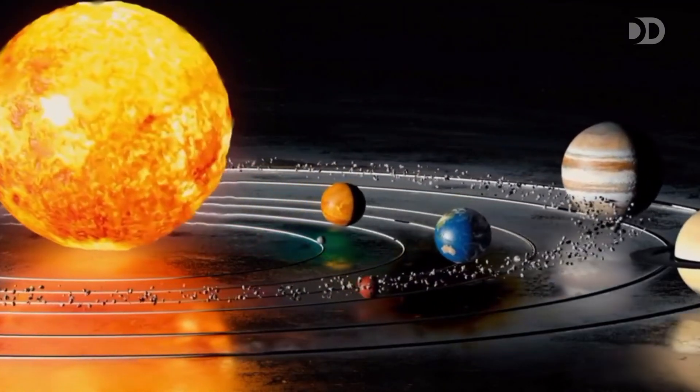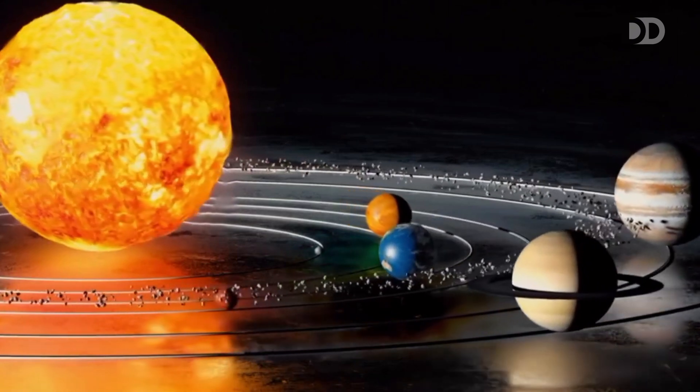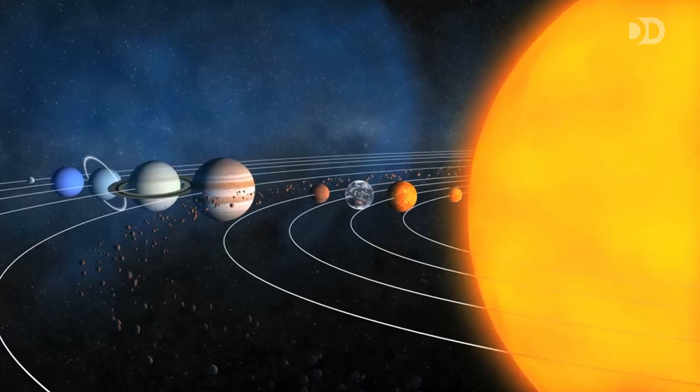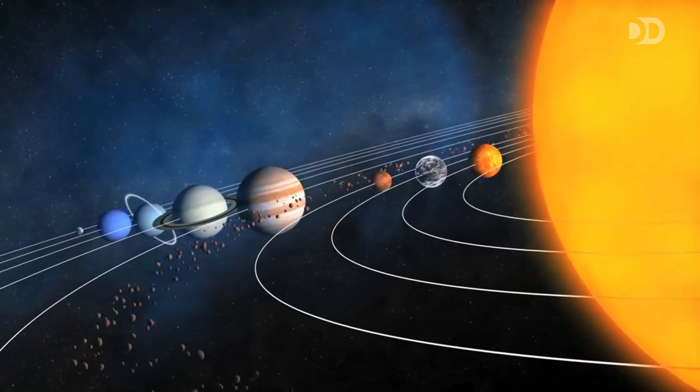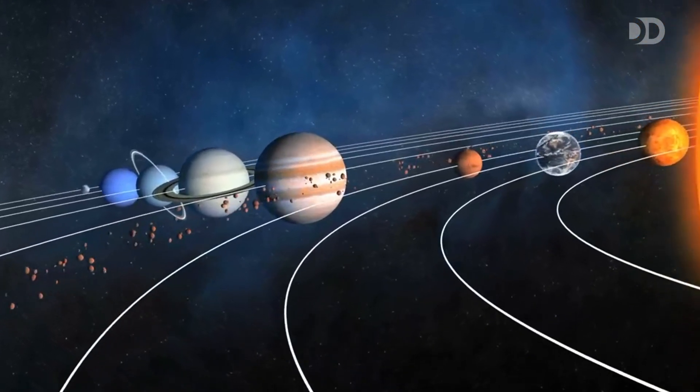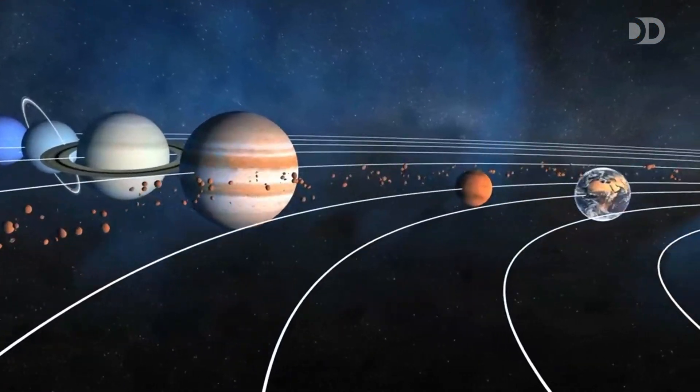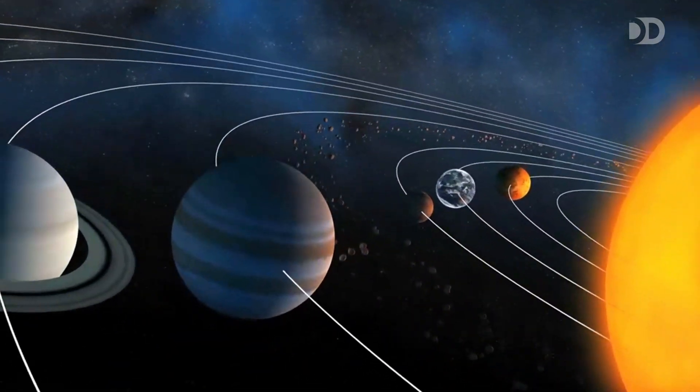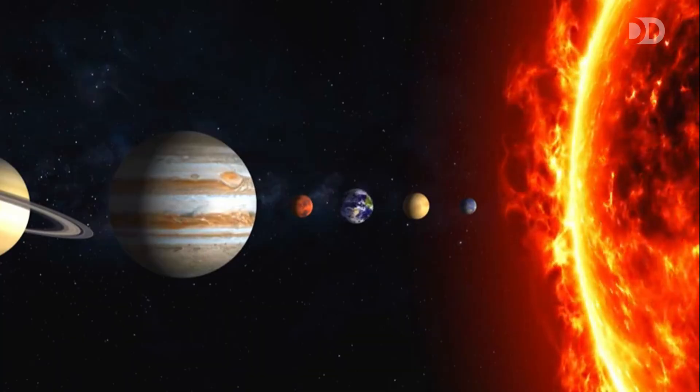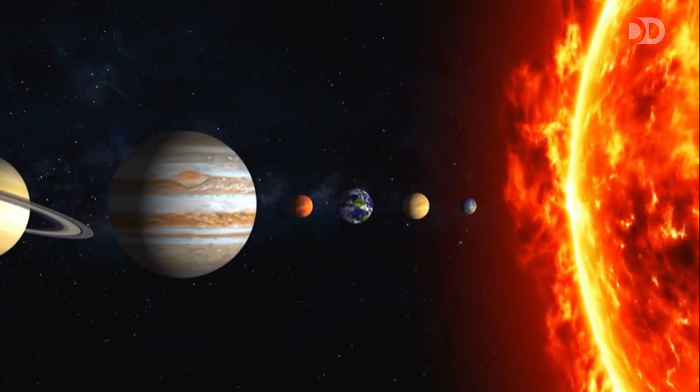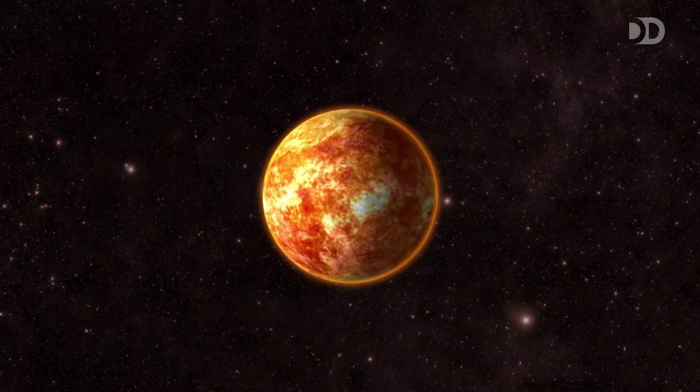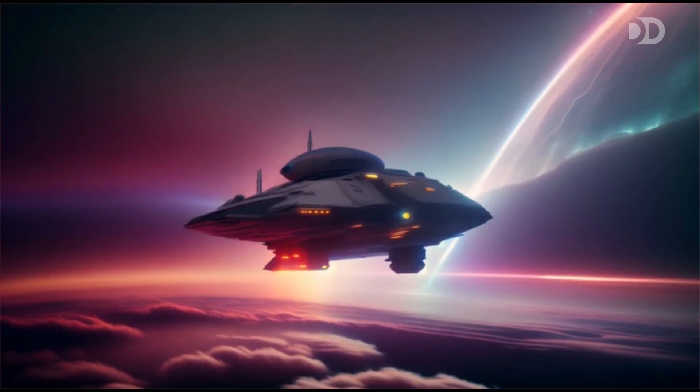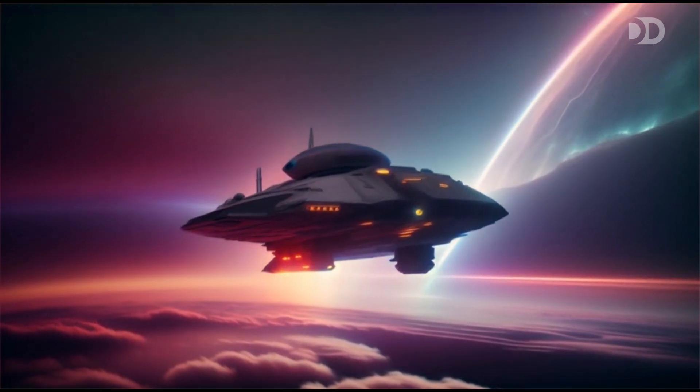Mercury's closeness to the Sun also makes it a natural laboratory for testing Einstein's theory of relativity. The planet's orbit shifts in a way that can only be explained by the warping of space-time itself, offering us a glimpse into the deeper workings of the universe. Though Mercury is small and often overlooked, it holds profound mysteries about the birth of our solar system, the power of the Sun, and the forces that shape planets. As we leave Mercury behind, we carry with us a sense of awe for this tiny, resilient world. Now let's journey onward to our next destination.